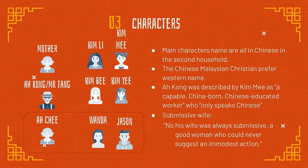Ah Kong is described by Kim Lee as a capable, Chinese-educated worker who only speaks Chinese, reinforcing his authentic Chinese identity. Ah Kong has two wives — in Chinese culture, only the wealthy are able to obtain a second wife. The second wife, also known as a mistress, has her own duties within the household.